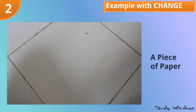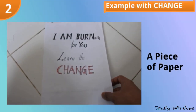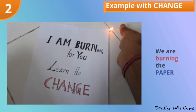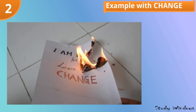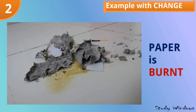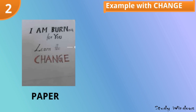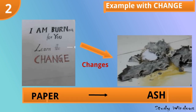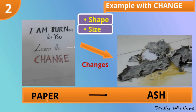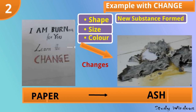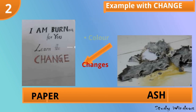Another example: take a piece of paper and burn it. The paper turns into ash. Here, the shape, size, and color are all changed, and a new substance is formed. Can you make this paper back from ash? No, it is not possible.